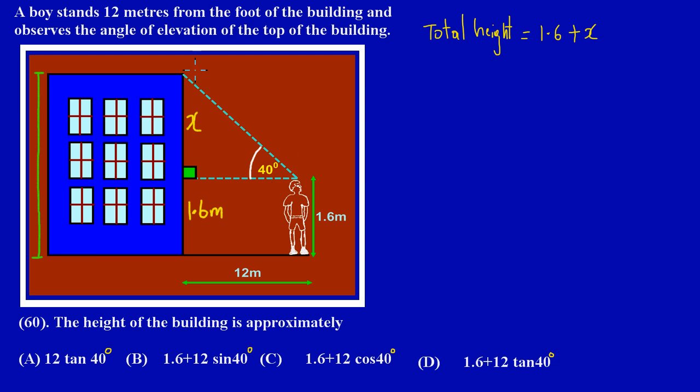Now given the fact that we have a right angle triangle and they gave us the distance here, my friends, they gave us the distance from the foot of the building to where the boy is standing to be 12 meters. Then obviously the base, if you notice, the base of the triangle is the same distance.